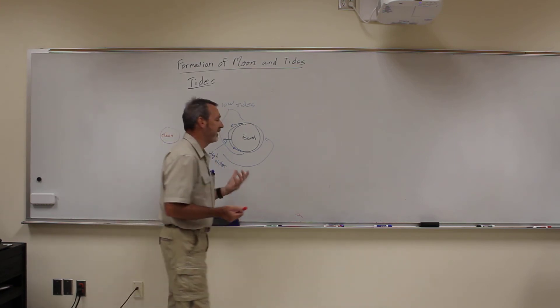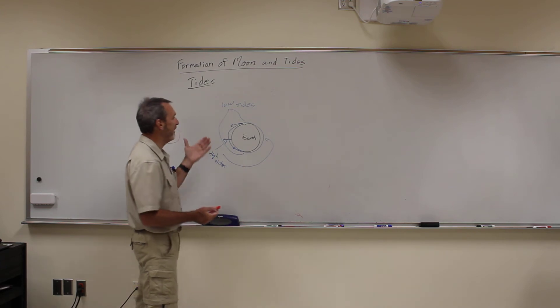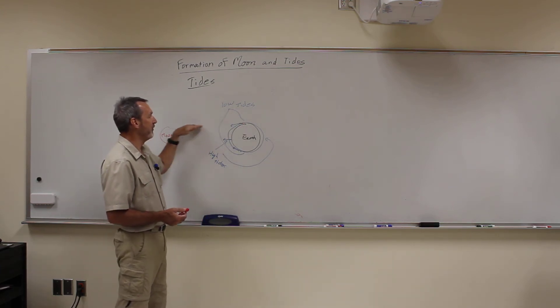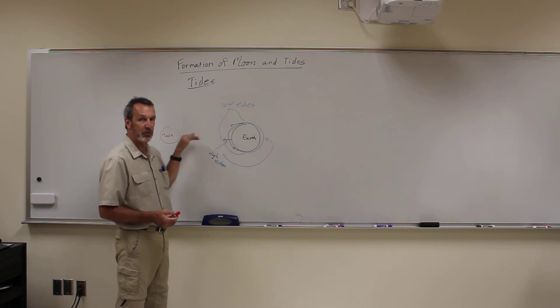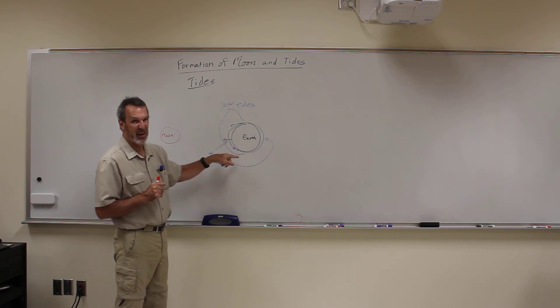Now the sun can cause tides as well, but the sun is much further away and so it doesn't have as much differential pull. It's the angle that you get, the difference between it, because the moon's closer. Even though the moon's gravity isn't nearly as strong as the sun's, it has a bigger effect on the tides.